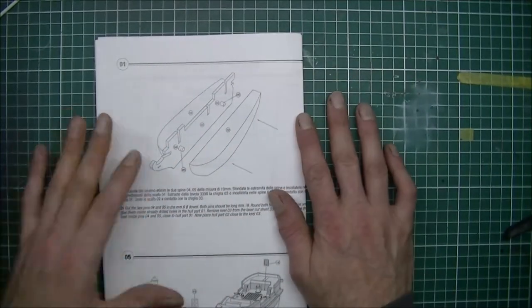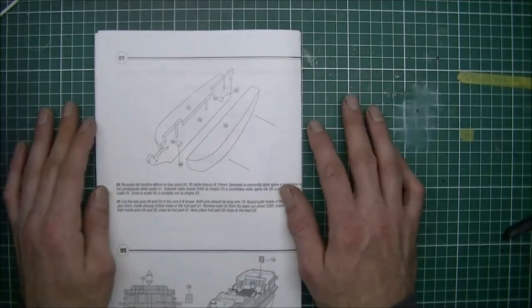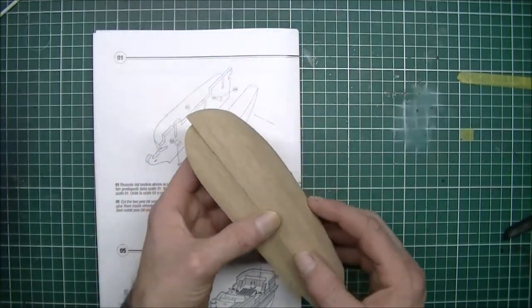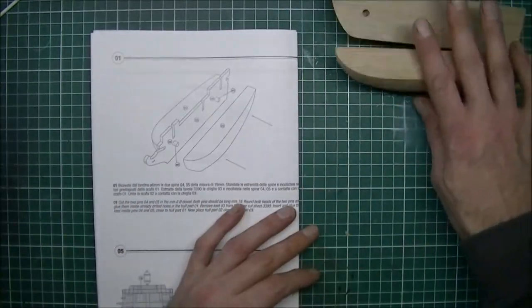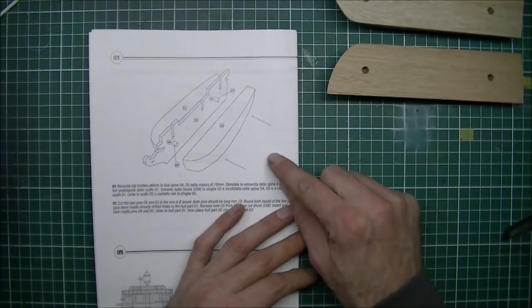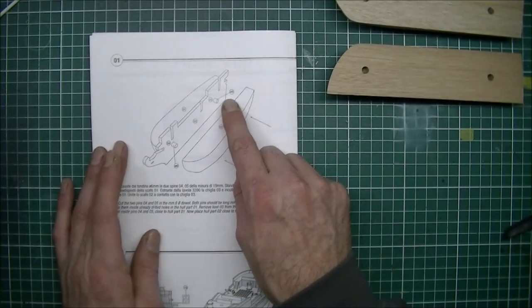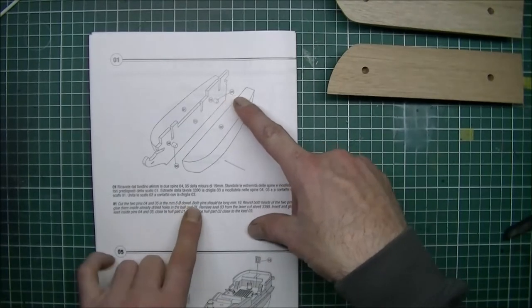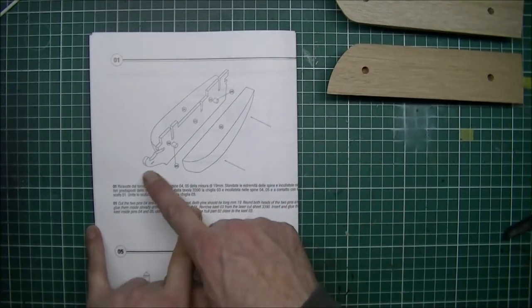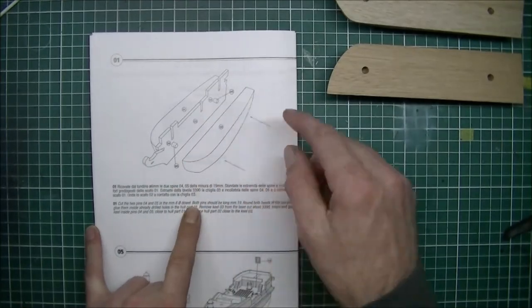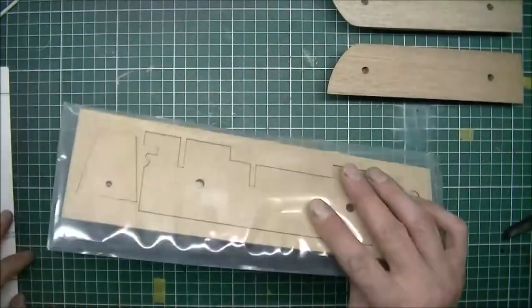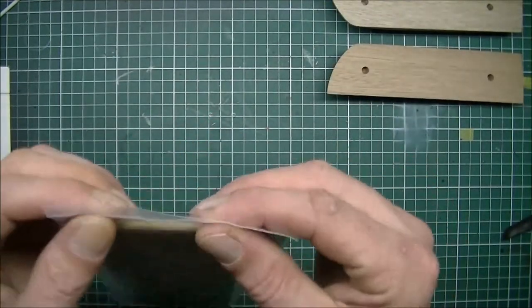Step one, obviously we shall need both parts of the hull and we need two dowels which are six millimeters in diameter, and we need that part which is in this bag. So first of all let's open this bag.